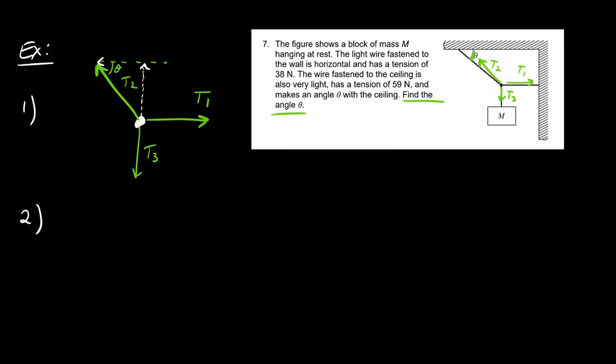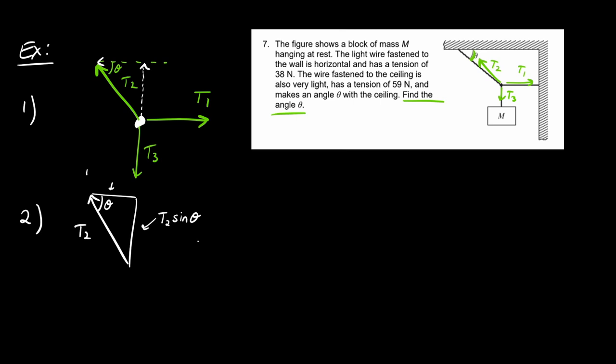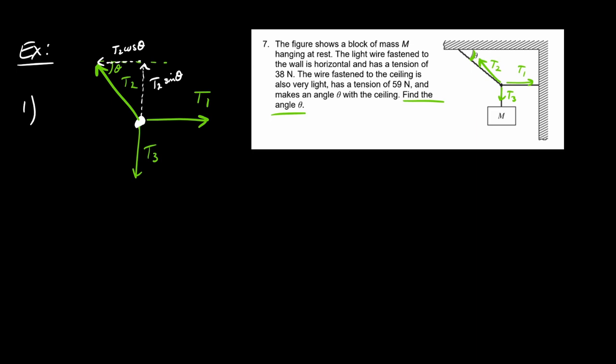Step two: decompose the diagonal T2 force. The vertical component is T2·sin(theta) — from sine of theta equals opposite over hypotenuse T2, then multiplying both sides by T2. The horizontal component is T2·cos(theta).